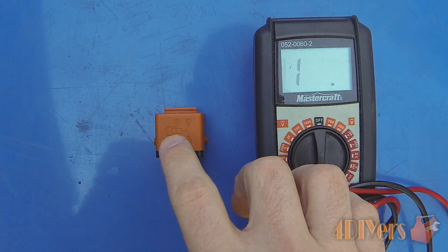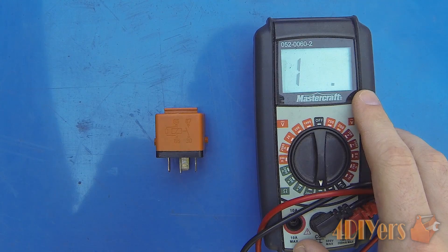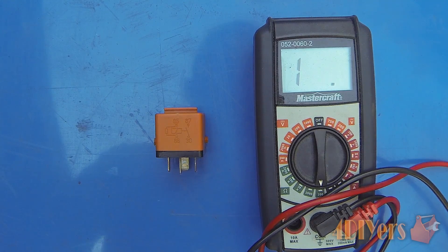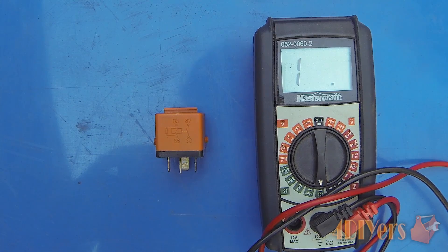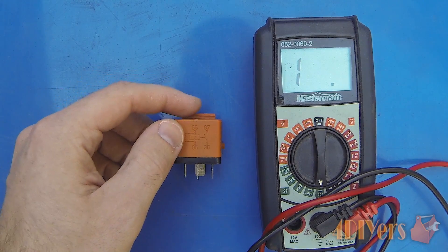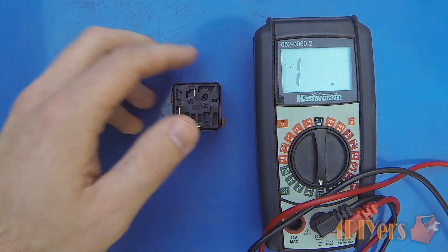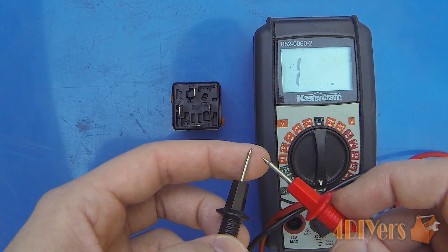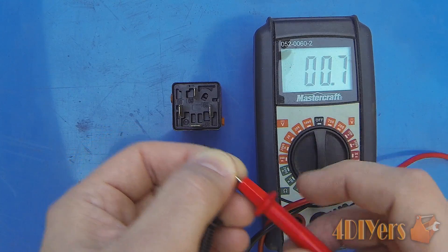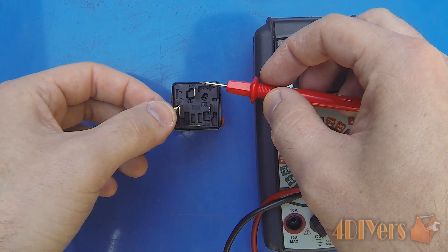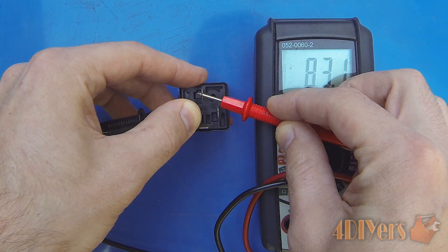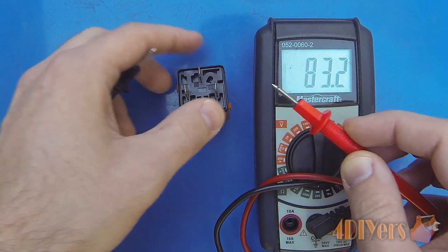First, we'll test the coil side of the relay using a multimeter set to the ohm setting. We're looking for a reading between 50 and 120 ohms, which tells us the coil is functioning correctly. The range varies because you'll have different size coils. Testing terminals 85 to 86, first we determine the current ohms between the probes, which shows 0.7. Testing 85 to 86, we get 83.1 ohms, which tells us the coil is functioning correctly.